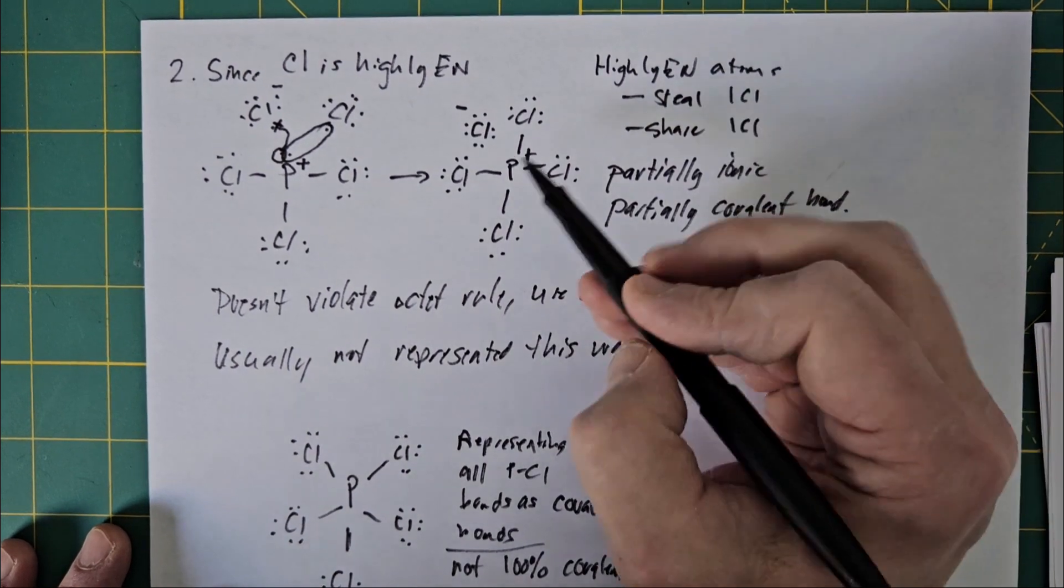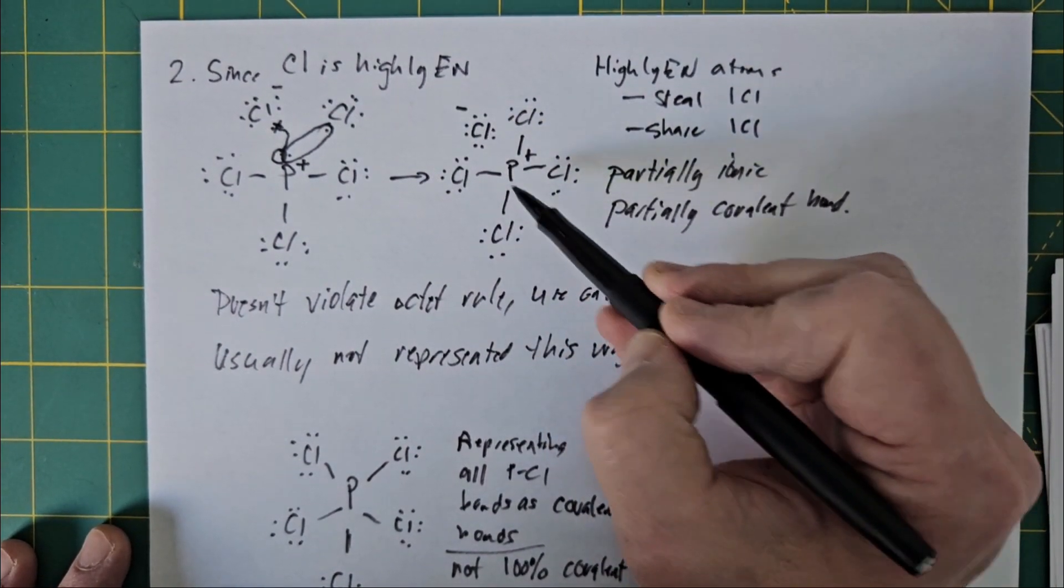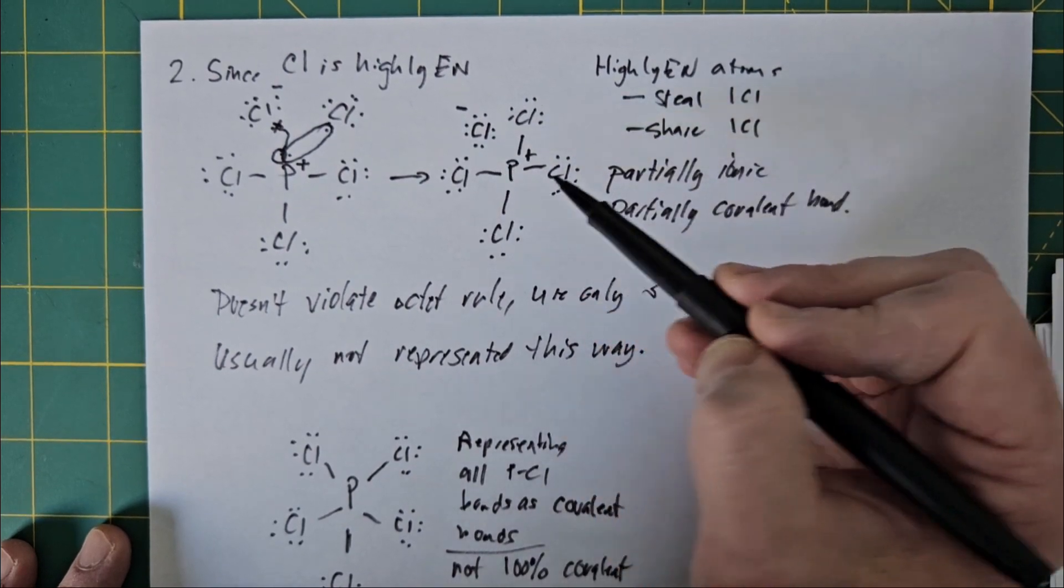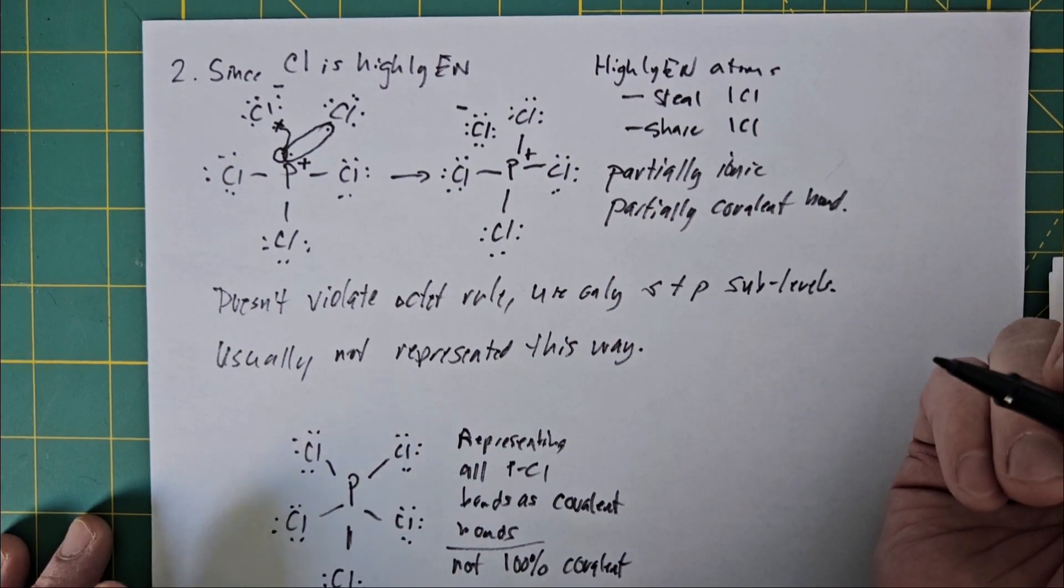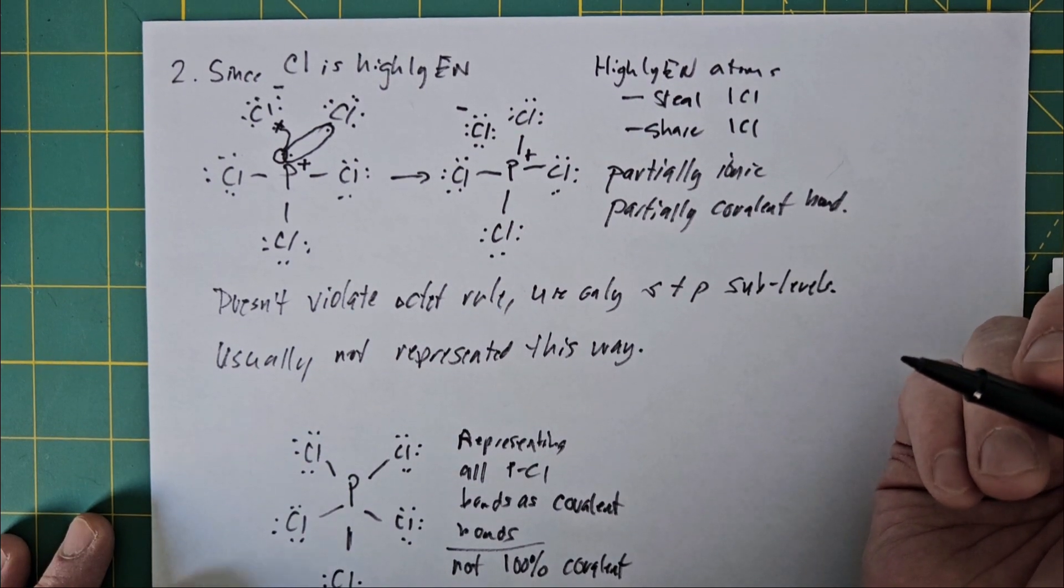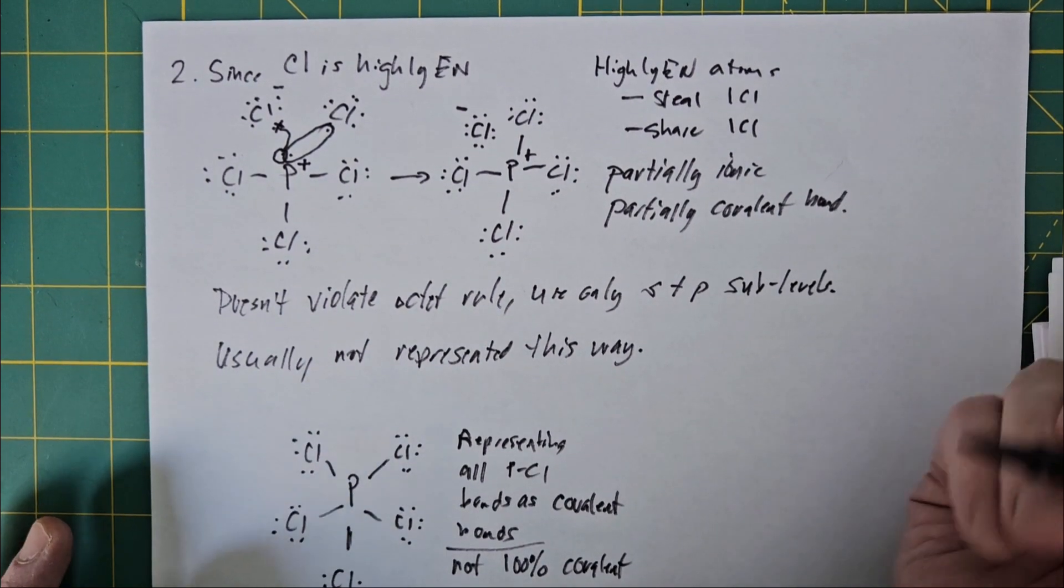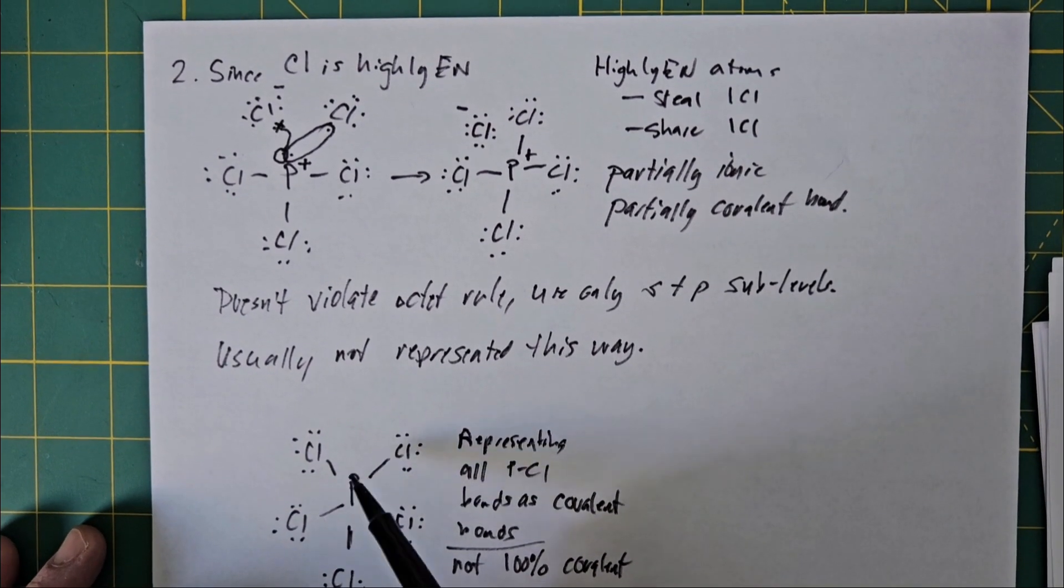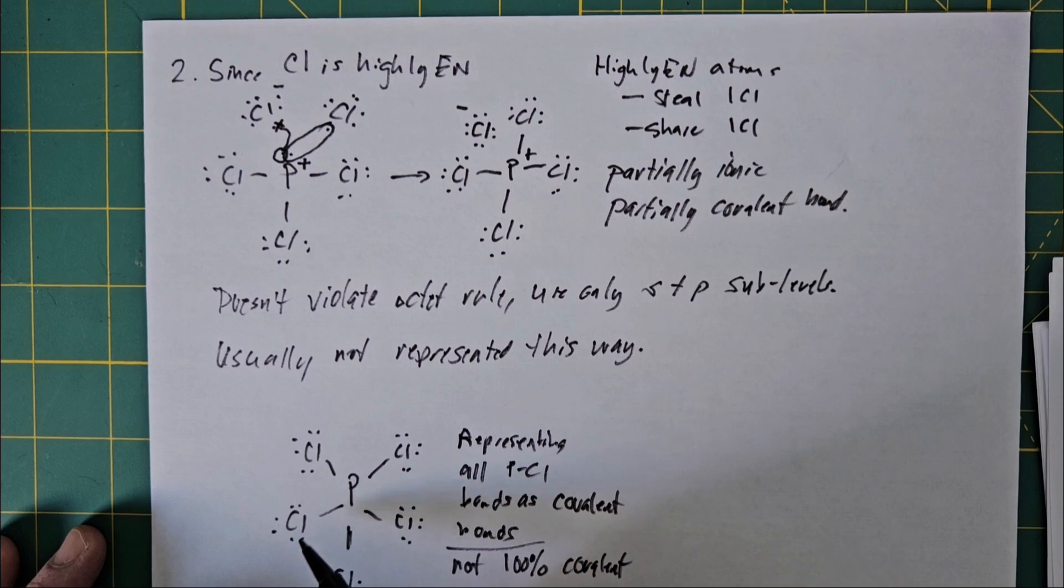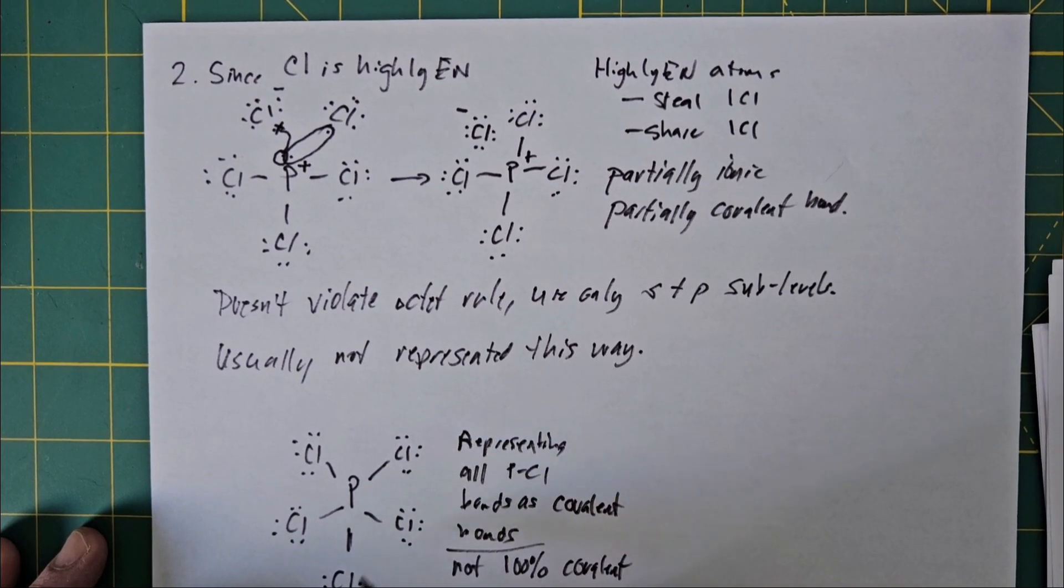So this ionic bond between this phosphorus and this chlorine, you're just pretending like it's going to be a fifth covalent bond. Apparently, the way the rules are for drawing the structure and what's acceptable and what's not, is that if a bond is at least somewhat covalent, you can represent it this way.